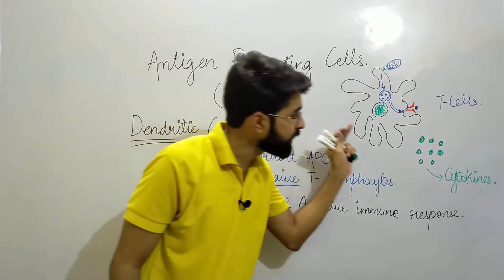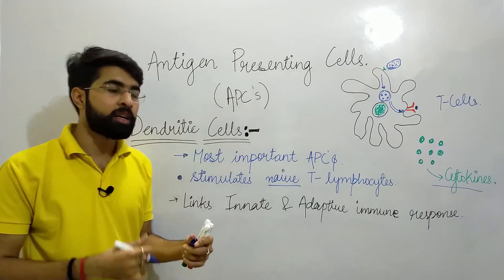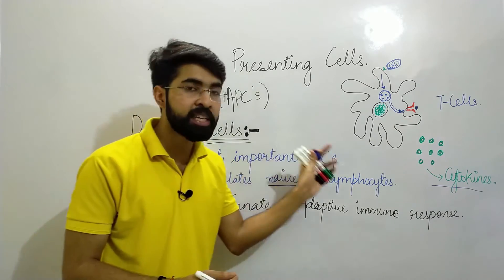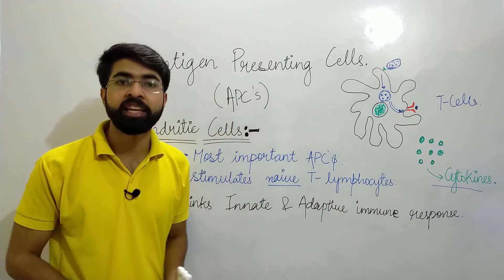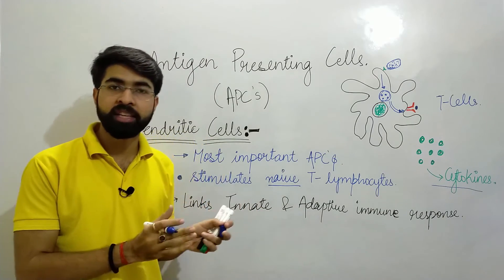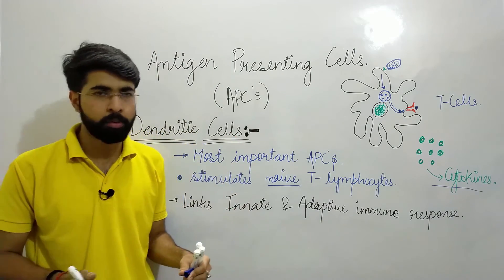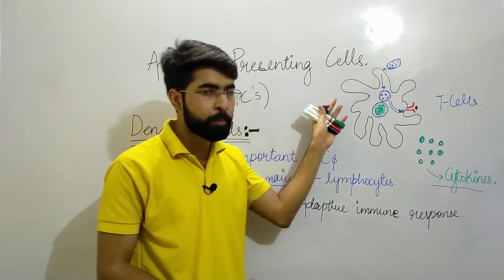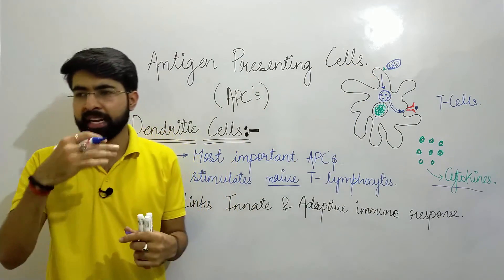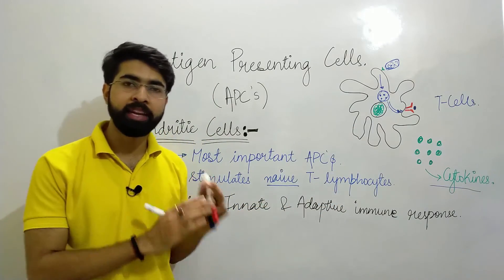Dendritic cells also secrete signals in the form of cytokines into the bloodstream and surrounding area. By means of these signals, other T cells and nearby cells are recruited to the site to investigate the infection and attempt to kill the pathogen. Dendritic cells have long finger-like projections, have phagocytic activity, and are widely distributed in lymphoid tissues, mucosal epithelia, and various other parts of the body.